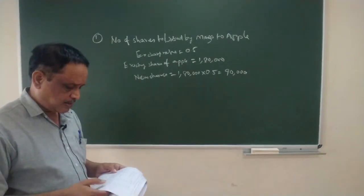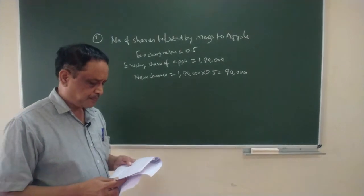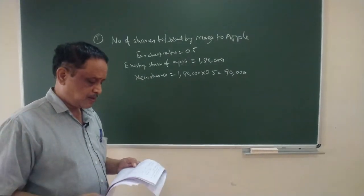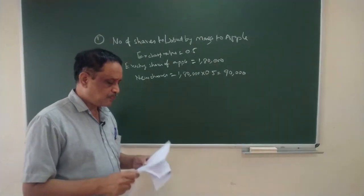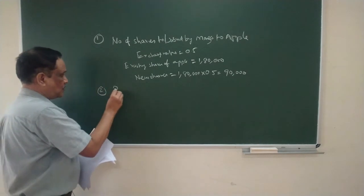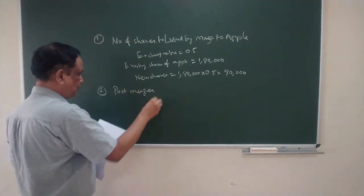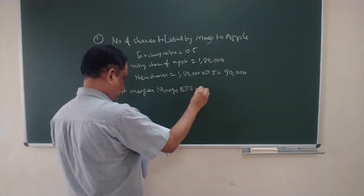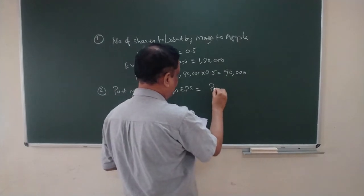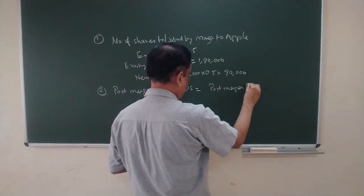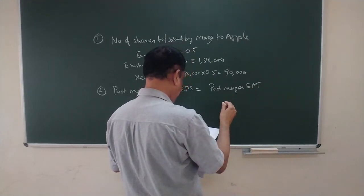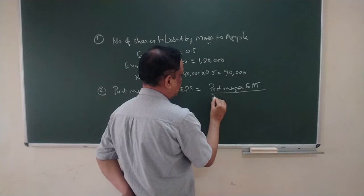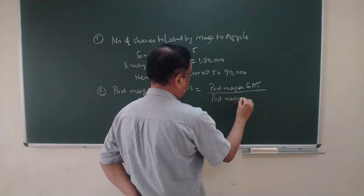The second question is: what is the EPS of Mango Limited after the acquisition? For this we need post-merger earnings divided by the number of shares. This will give you the EPS of Mango after acquisition. So for the second question, post-merger Mango EPS equals post-merger earnings divided by post-merger number of shares.